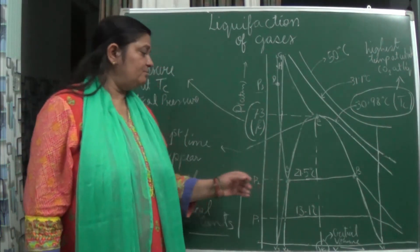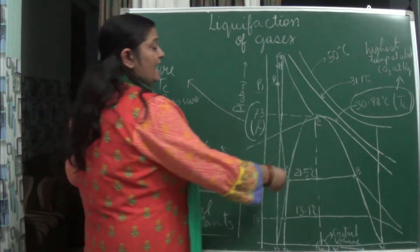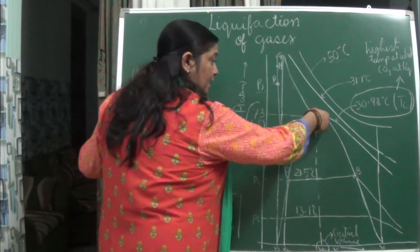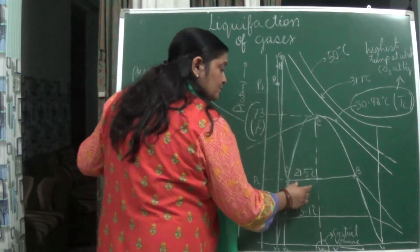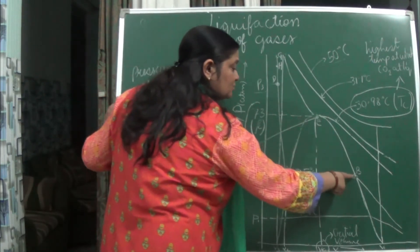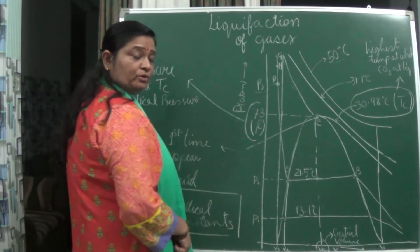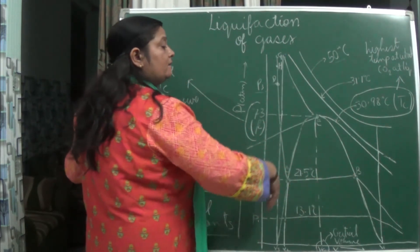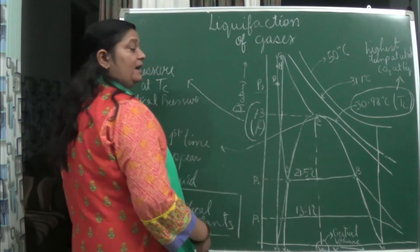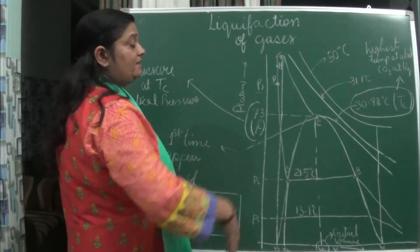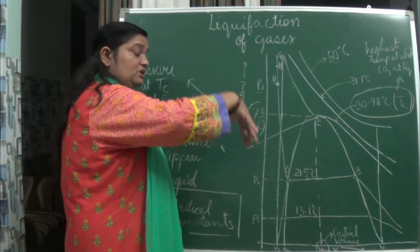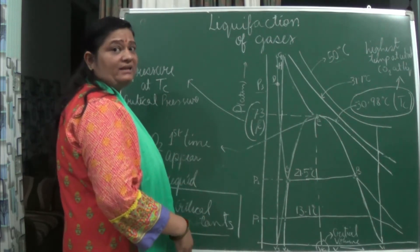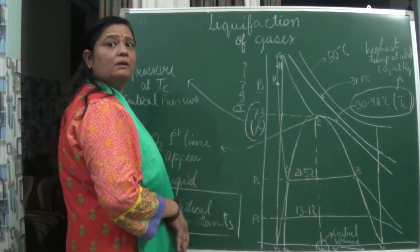The gases which are present below the critical temperature, where liquid and gas both are existing, are also known as vapors. The pressure exerted by these vapors is known as vapor pressure. So now let us study about the liquid state.